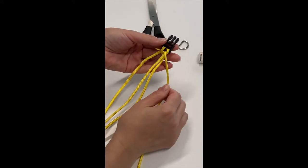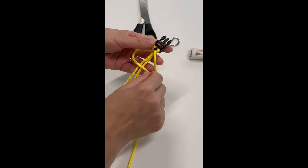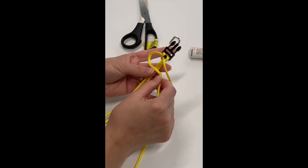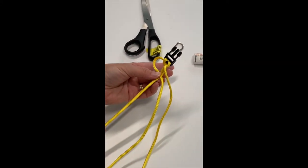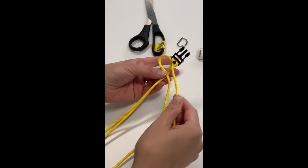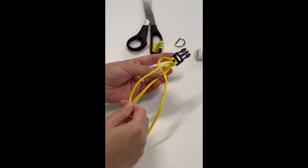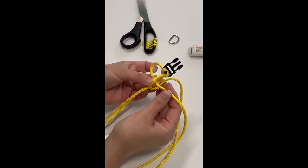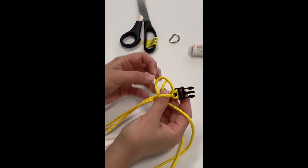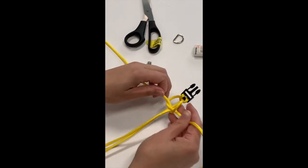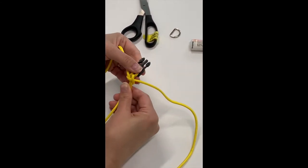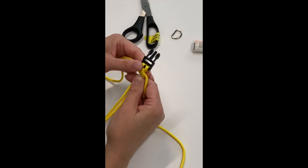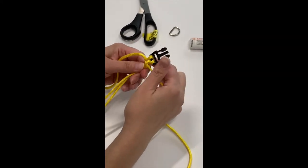Now you're going to begin the other side. You're going to take it and loop it again over the two pieces of paracord. Take your other paracord and you're going to wrap it around the paracord and underneath and through. And that is your first stitch or weave.